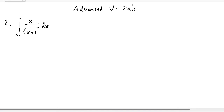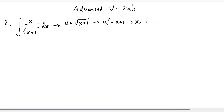Now let's take a look at the integral of x over the square root of x plus one dx. Obviously we can't use u-substitution directly because it won't cancel out anything. But what I can do is make u equal to the square root of x plus one. Instead of looking for du, I'm going to solve for x. If I square both sides, u squared equals x plus one, so x equals u squared minus one. Then I can find dx: since x equals u squared minus one, dx is going to be equal to 2u du.